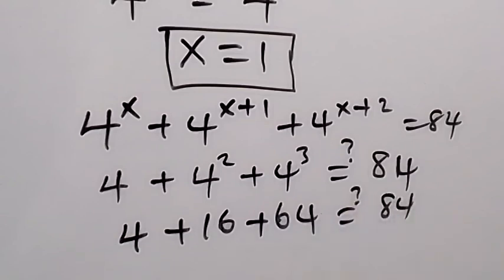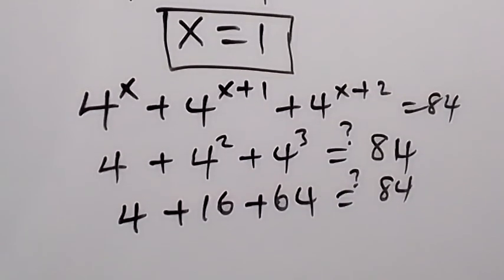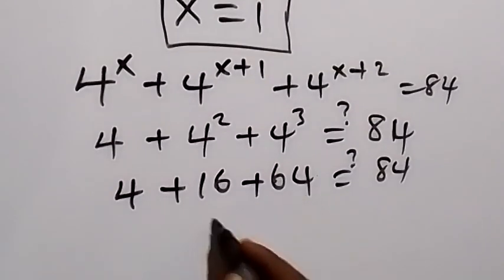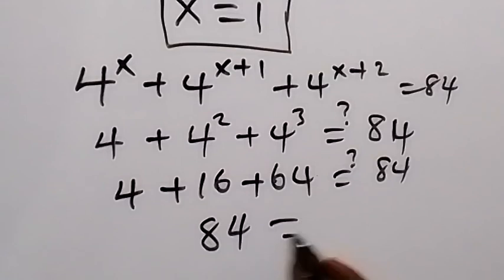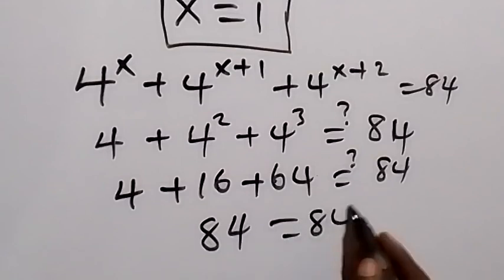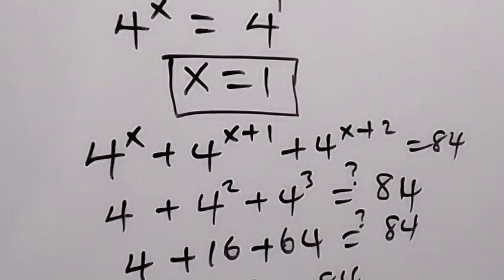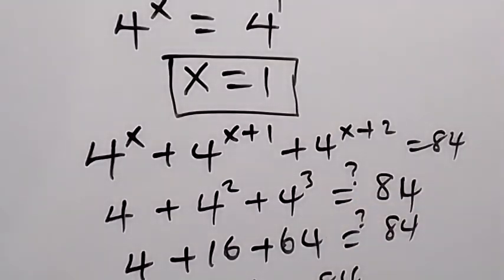Adding these up: 4 plus 16 is 20, and 20 plus 64 is 84, which equals 84. The left-hand side equals the right-hand side, confirming that x equals 1 is the correct solution.